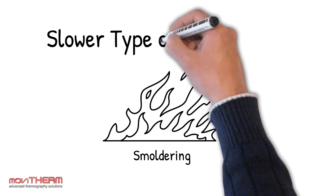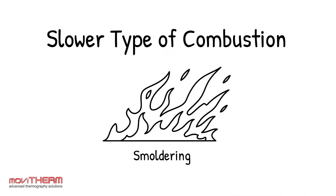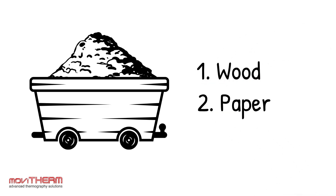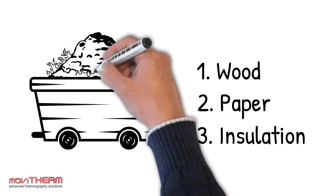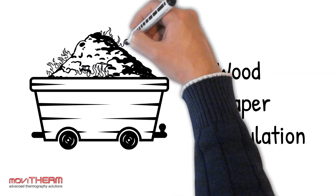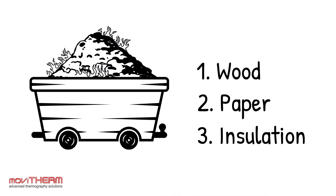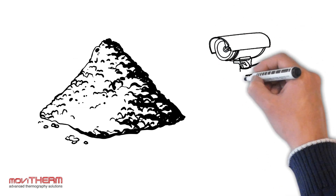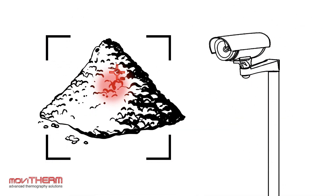Smoldering is a slower type of combustion that typically occurs when a solid material such as wood, paper, or insulation is heated to its ignition temperature and begins to smolder. This type of combustion can be challenging to detect and particularly dangerous because it can occur without visible flames. However, early fire detection systems that use infrared cameras can detect the heat associated with smoldering combustion, even if it's not visible to the naked eye.